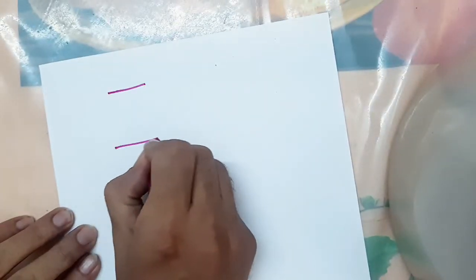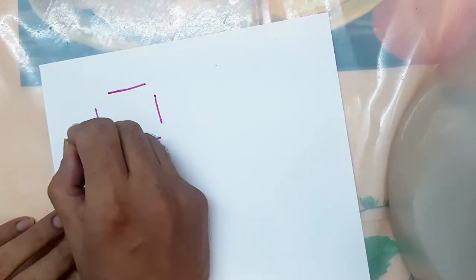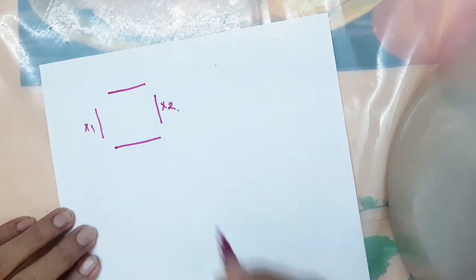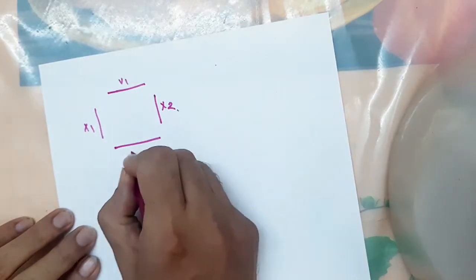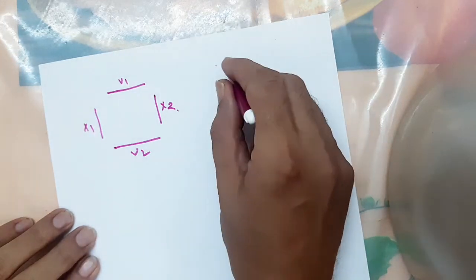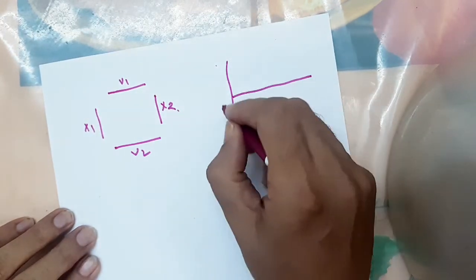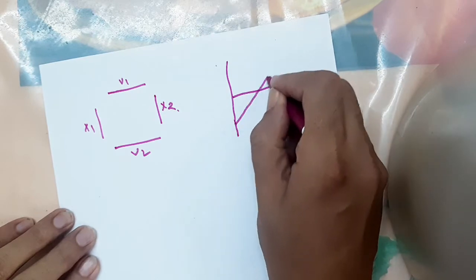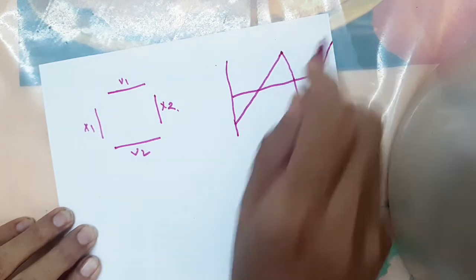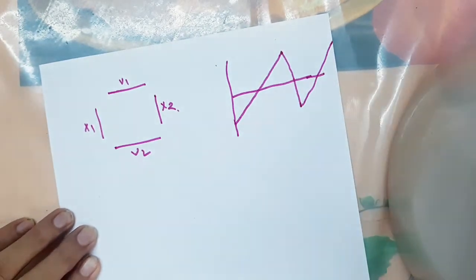What happens when we are applying sawtooth wave? This is our CRO screen. These are X1 and X2 — the two horizontal deflecting plates — and this is V1, V2. At present, we are not applying any signal to V1, V2; we are applying sawtooth wave to X1, X2. The sawtooth waveform looks like this.